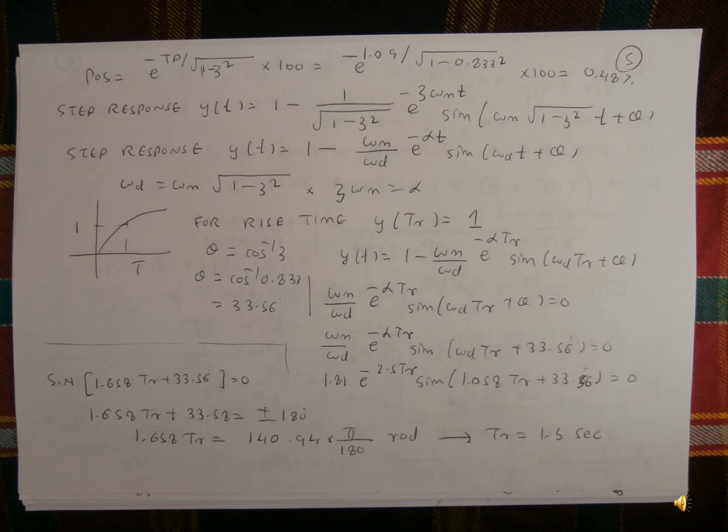Therefore 1.658·tr equals 140.9 times π over 180 radians, giving tr equal to approximately 1.5 seconds.